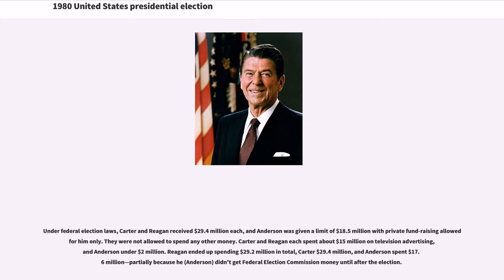Under federal election laws, Carter and Reagan received $29.4 million each, and Anderson was given a limit of $18.5 million with private fundraising allowed for him only. They were not allowed to spend any other money. Carter and Reagan each spent about $15 million on television advertising, and Anderson under $2 million. Reagan ended up spending $29.2 million in total, Carter $29.4 million, and Anderson spent $17.6 million, partially because he didn't get federal election commission money until after the election.